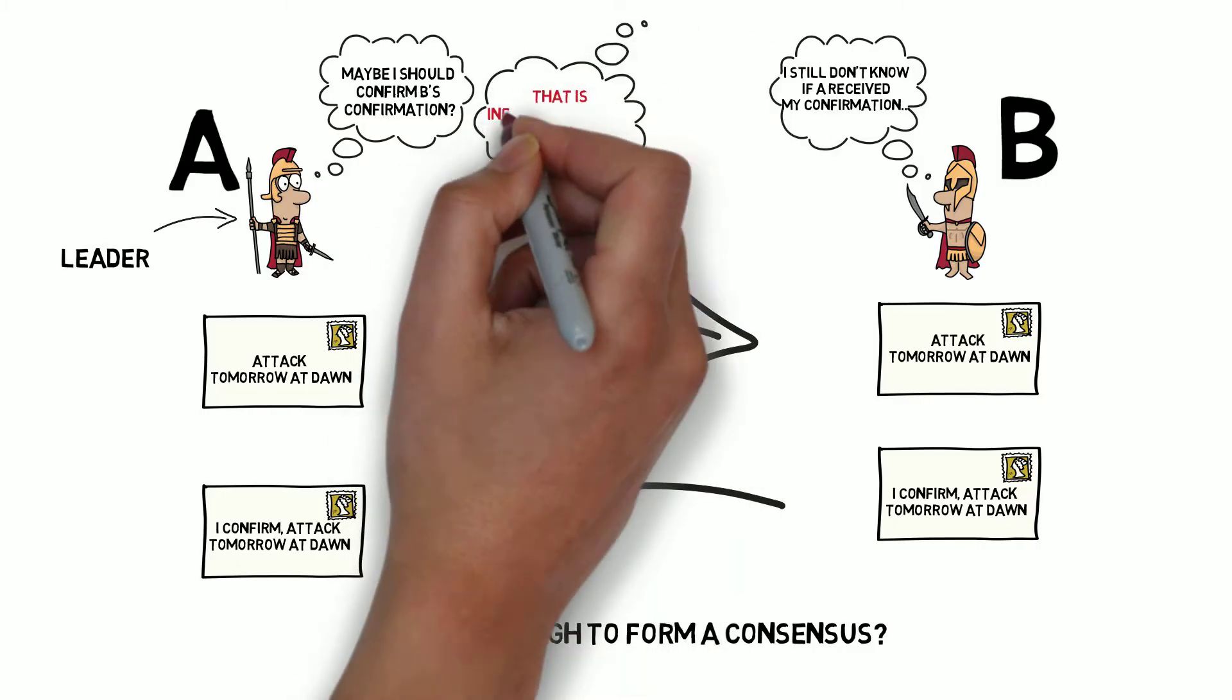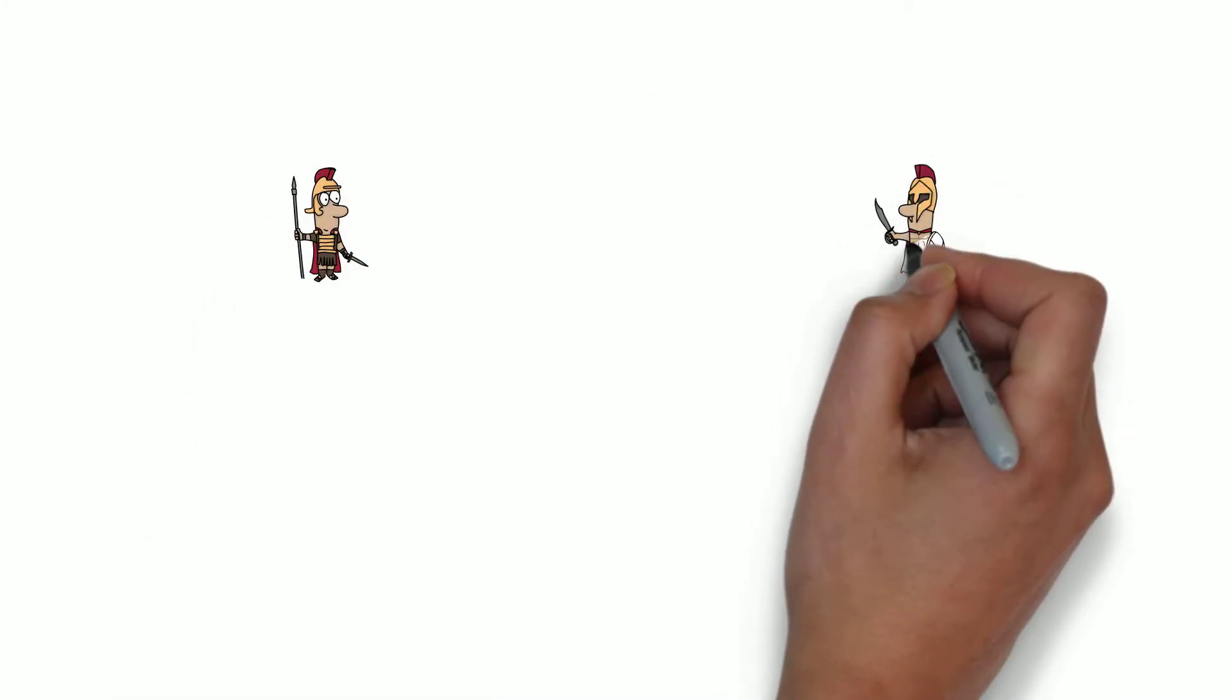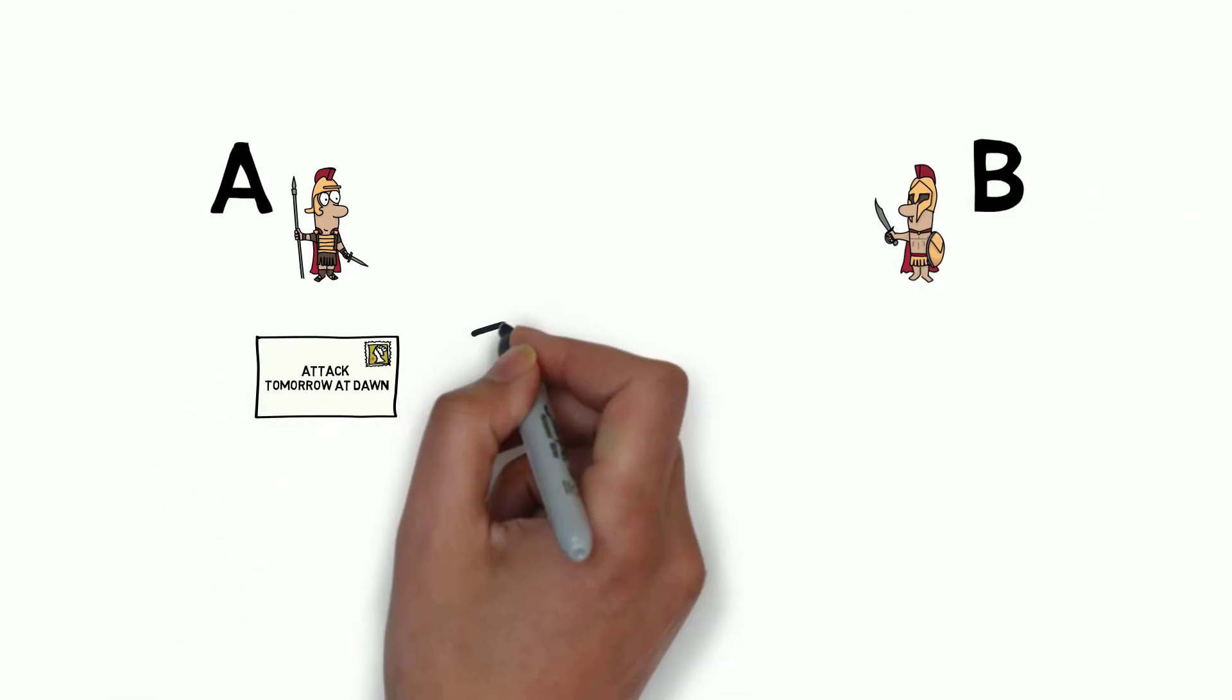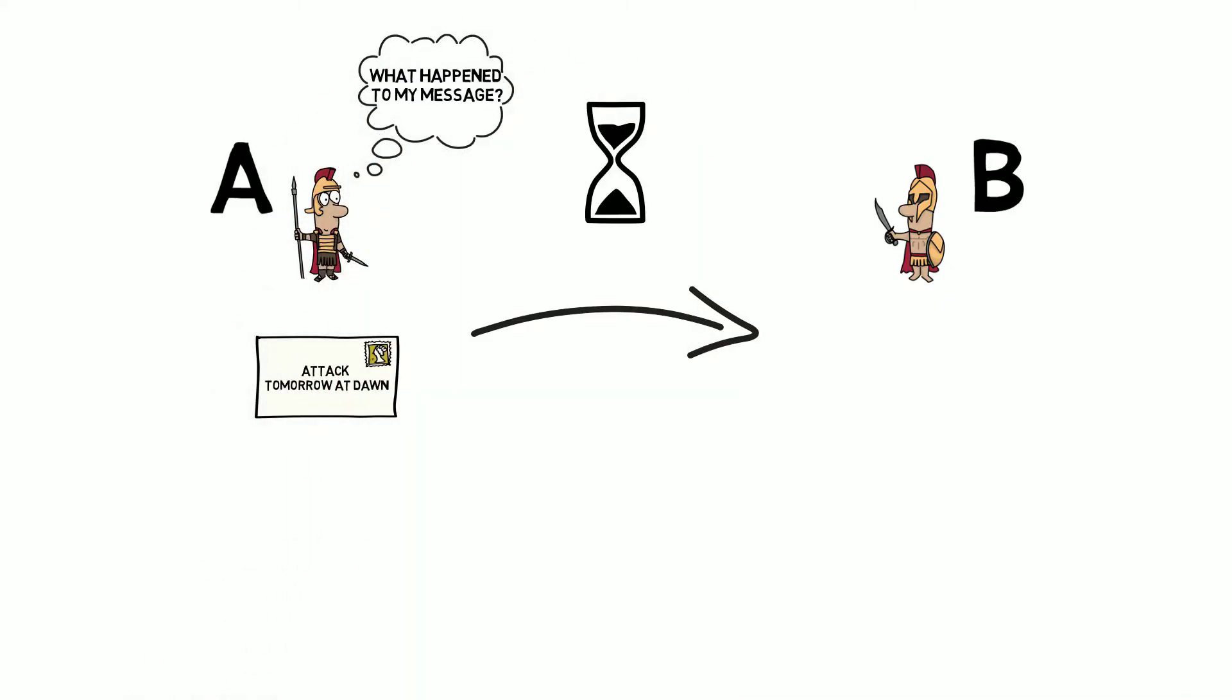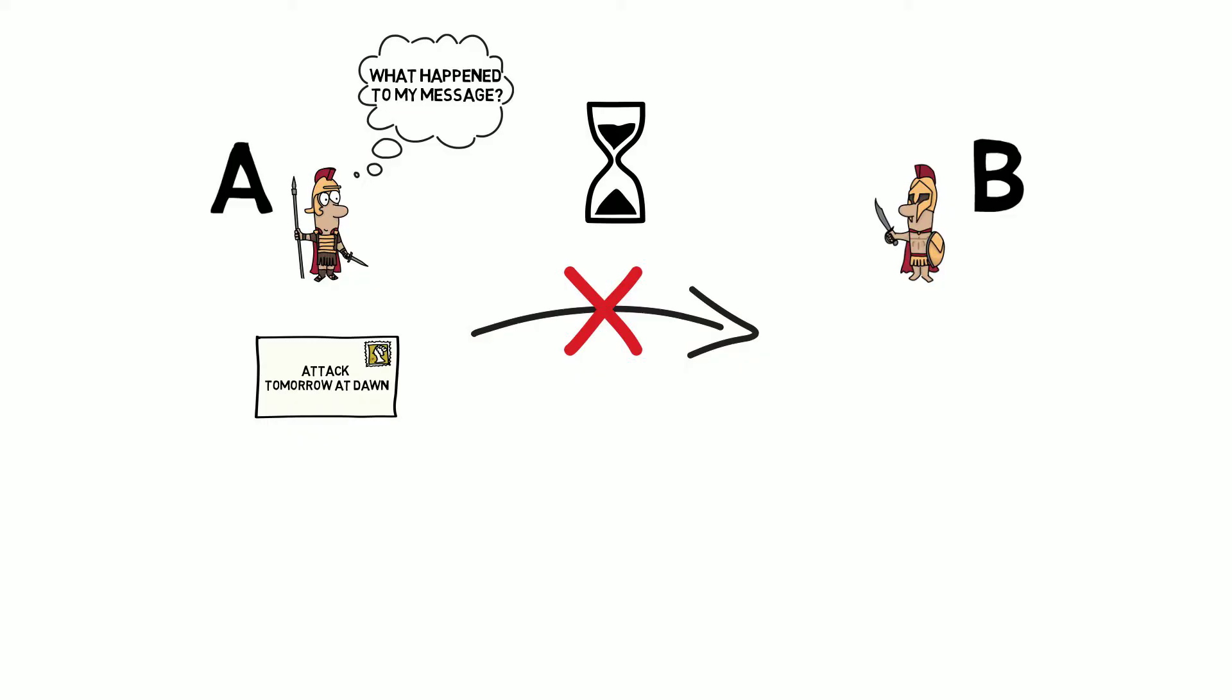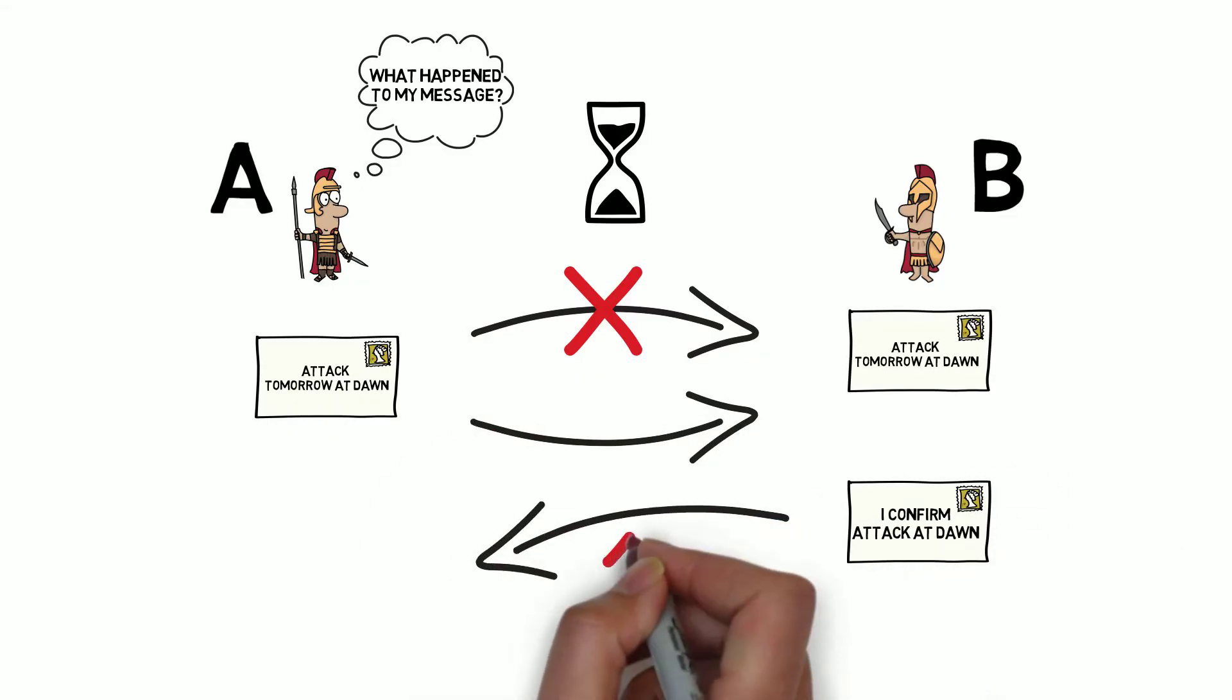In this second scenario, let's also assume that general A sends a message to general B. Some time has passed and general A starts wondering what happened to his message, as there is no confirmation coming back from general B. There are two possibilities here. Either the messenger sent by general A has been captured and hasn't delivered a message, or maybe B's messenger carrying B's confirmation has been captured.